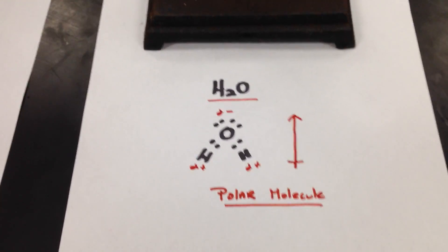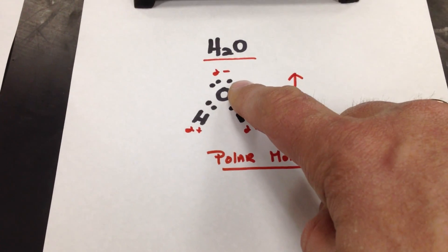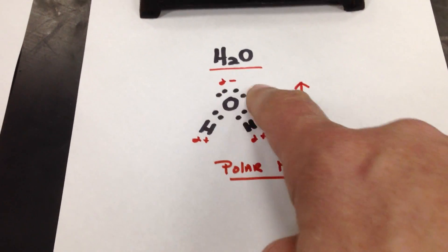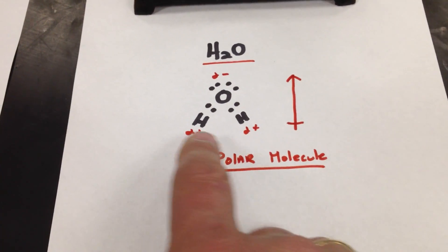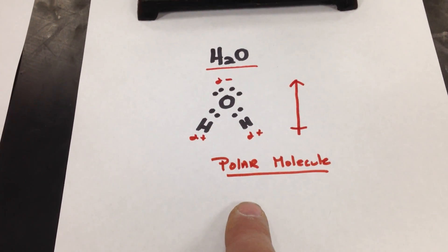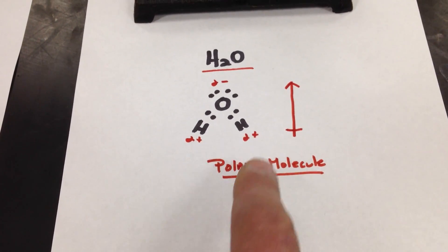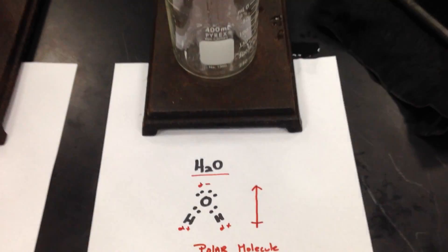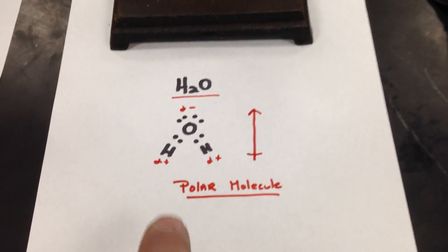And the negative end of the oxygen, the partial negative end, makes this side the negative part of the molecule. And this is the positive or partial positive, and we have a dipole moment. Polar molecule. It's got a polar bond and is not symmetrical. Therefore, it's polar. So water is going to have a positive end and a negative end.